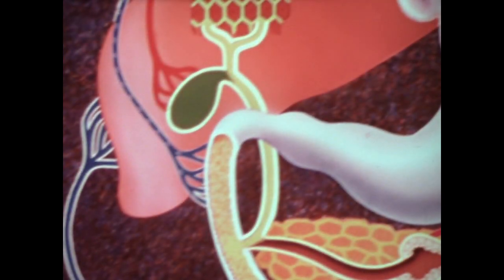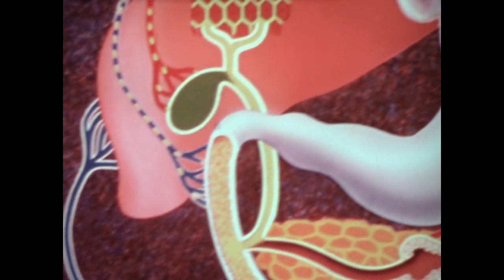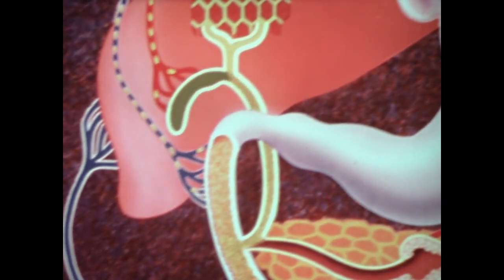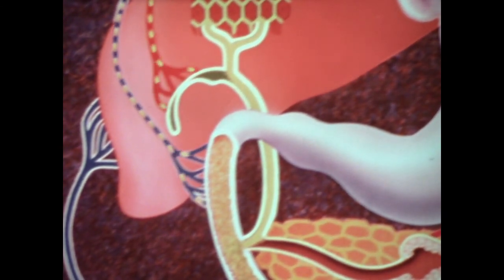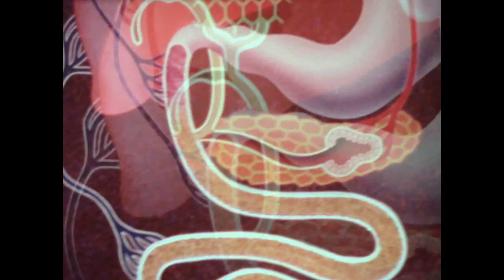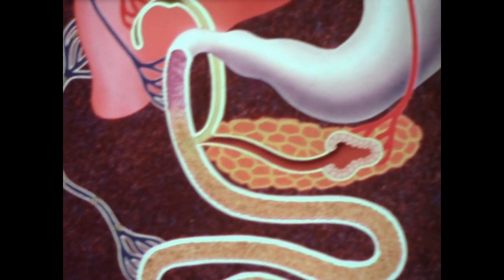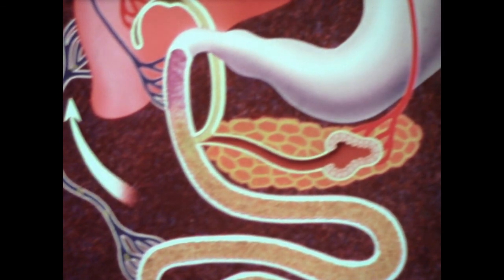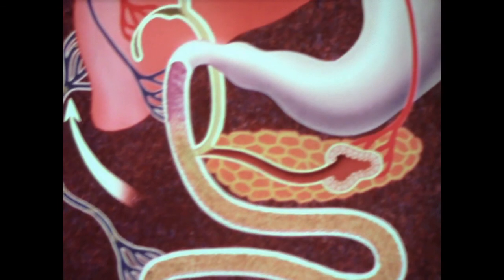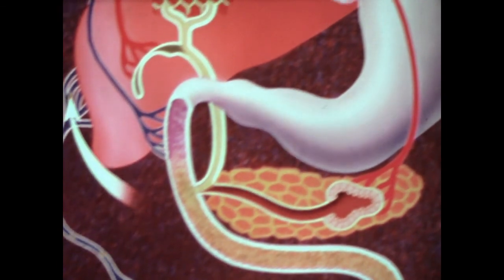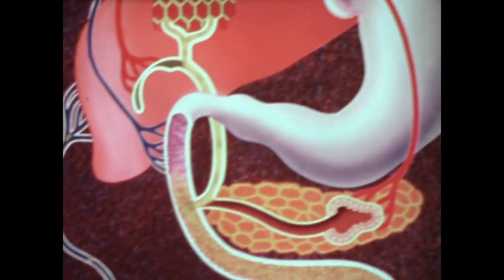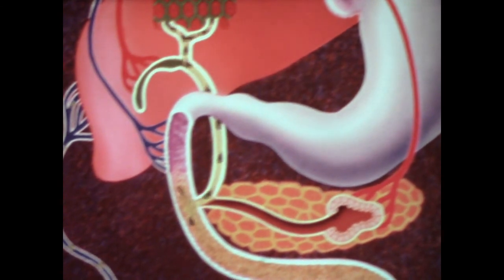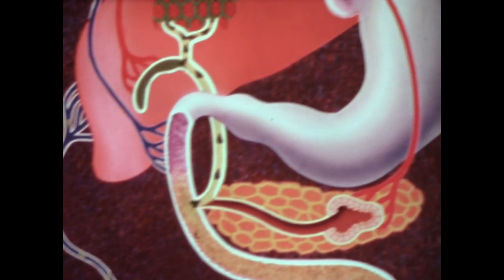Within the body, the flow of bile is controlled by a regulated mechanism. The presence of food in the duodenum triggers the release of a hormone that causes the gallbladder to contract. This forces bile into the duodenum. As this bile mixes with chyme, certain substances in the bile are absorbed through the intestinal wall and carried by the blood to the liver.